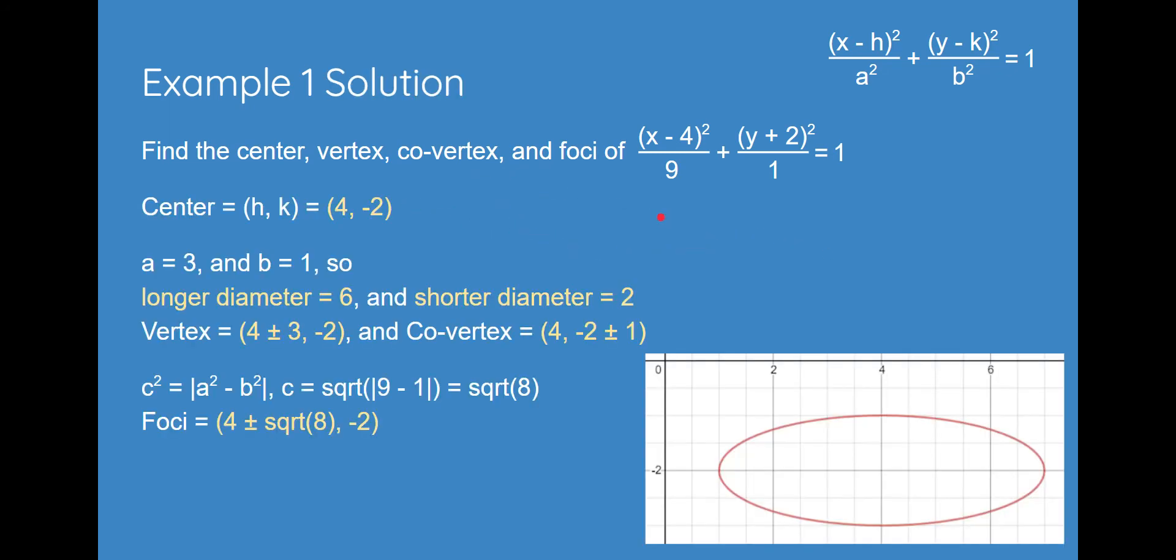Here's the solution. Center h, k, we get 4, negative 2. And we get a is 3 and b is 1. As you can see, it's a squared on the bottom, b squared on the bottom. So, square root of 9 is 3, square root of 1 is 1. And so, now we get our longer diameter is 6 because a represents the horizontal radius. So, we'd have to multiply radius by 2 and we'd get longer diameter is 6 and shorter diameter is 2, which is this b value times 2.